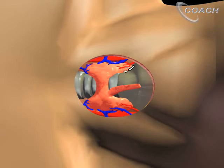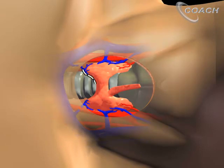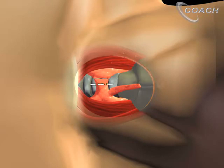Our first step is to divide some of these attachments superior to the isthmus. At this point, we'll oftentimes divide the inferior thyroid veins, or the ima veins, and then we'll divide the tissue inferior to the isthmus. Next, we'll transect the isthmus flush with the contralateral lobe. If you're doing a total thyroidectomy, you can divide it in the midline.